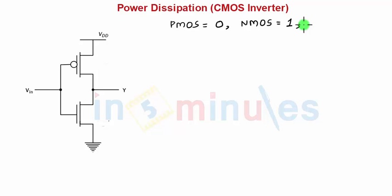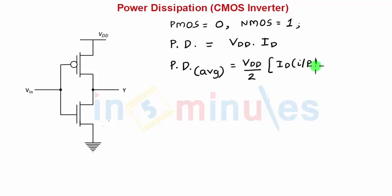Now we need to identify the power dissipation, the static power dissipation. We know that the power dissipation is given by VDD into ID. The static power dissipation average is nothing but VDD by 2 into ID when my input is high plus VDD by 2 into ID when my input is low.